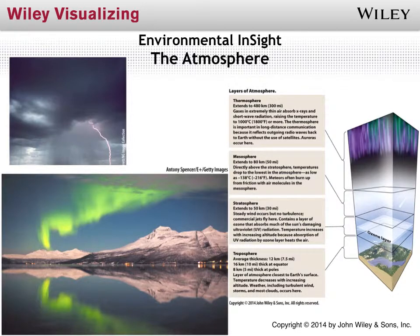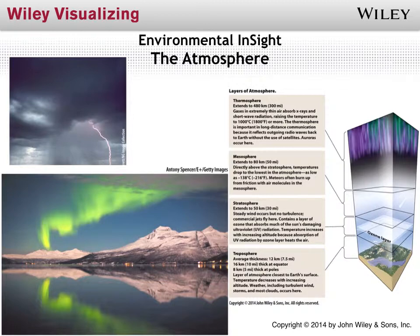Going back to the layers of our atmosphere: down near the surface we live in the troposphere. Its average thickness is about 10 miles at the equator and about half that at the poles, largely because of Earth's rotation. Within this layer, temperatures decrease as we move north or south of the equator, and also as we move up in elevation. This is also the layer where all of our weather occurs — most of our clouds, wind, and storms are generated here. This is the layer we most interact with.